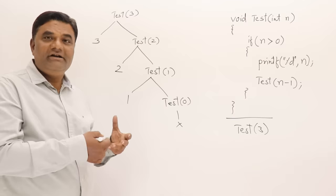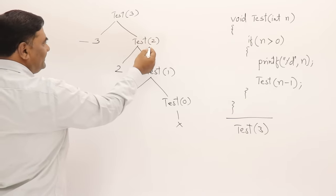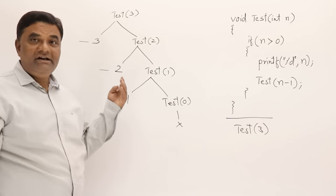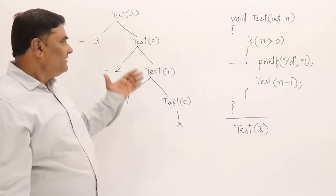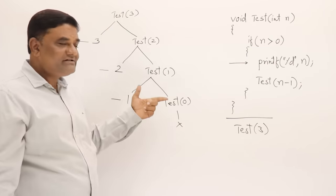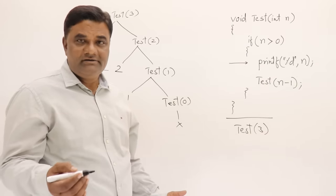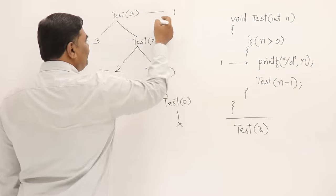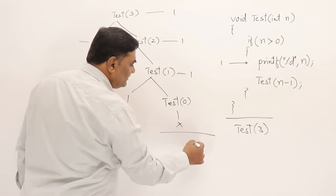So this is the tracing tree for this recursive function when I pass 3. What is the time taken? In each call it is printing a value and then calling again. The major work done is printing a value. The printf statement takes one unit of time — it is a single simple statement. So in each call it spends one unit of time.